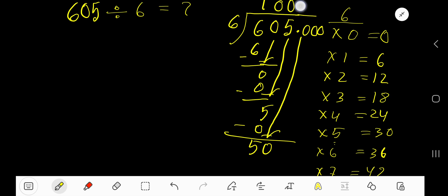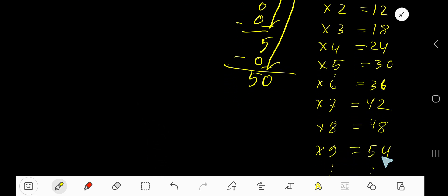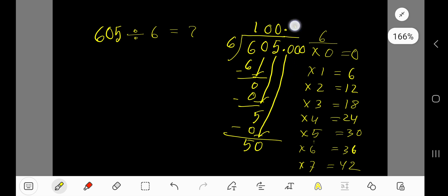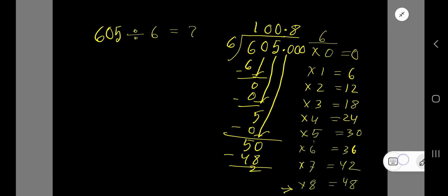The decimal must come into the answer directly. 6 goes into 50 how many times? 9 times would give 54, which is greater than 50, so we stop at 8 times. 8 times 6 is 48. Subtract and we get 2. Bring down the next zero — now we have 20.